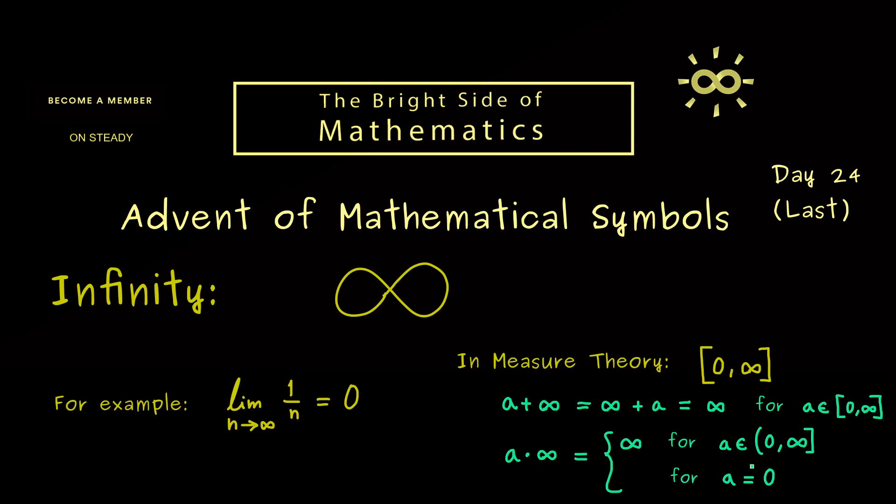However here one question remains. What to do with 0 times infinity. Usually for example when you deal with limits this expression is not well defined. But in measure theory it makes sense to define it. Indeed there 0 times infinity should be 0.